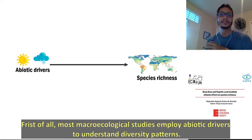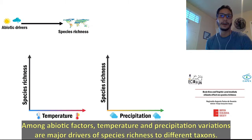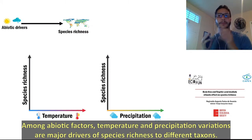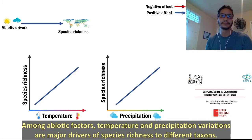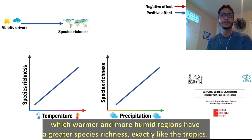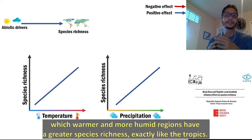Most macroecology studies employ abiotic drivers to understand diversity patterns. Among abiotic factors, temperature and precipitation variation are major drivers of species richness in different regions, which in more humid regions have greater species richness, exactly like the tropics.